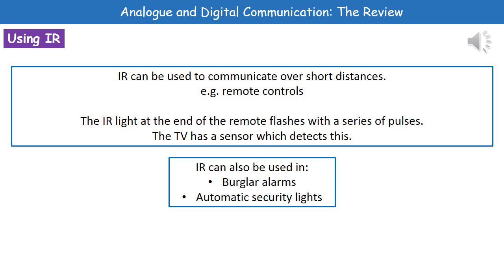Another communication method we can use is infrared, which allows us to communicate over short distances — for example in a remote control. When you push a button on your TV remote, it generates a series of pulses in infrared that are emitted from the front of the remote. Your TV has a sensor which detects this, and depending on what button you pushed, a code is sent that your TV interprets to change the channel or turn the volume up. We can also use infrared in burglar alarms and automatic security lights.